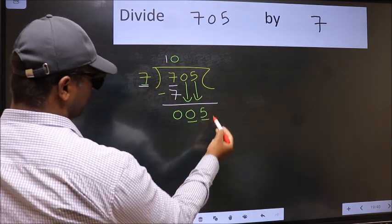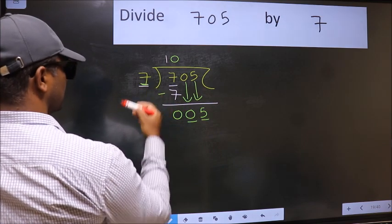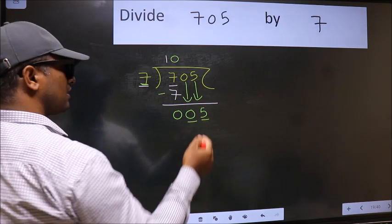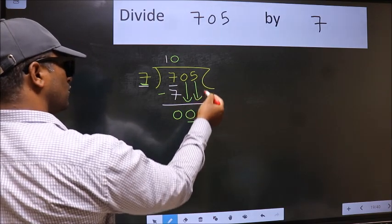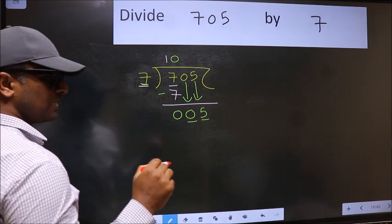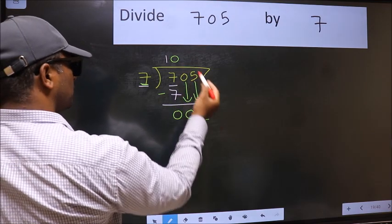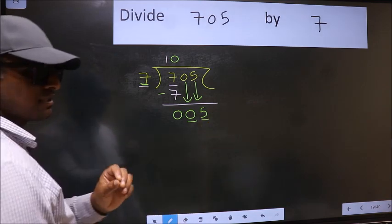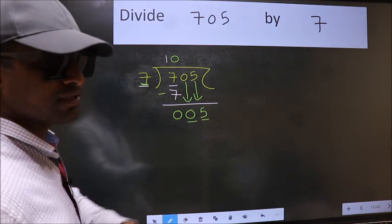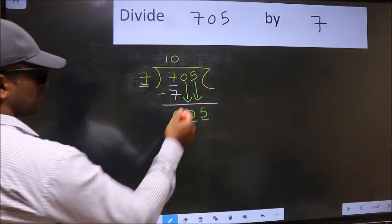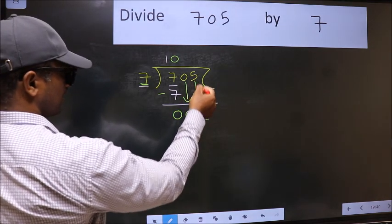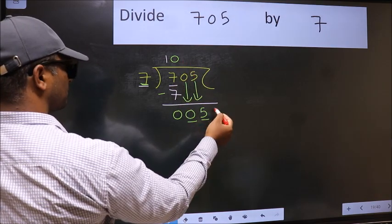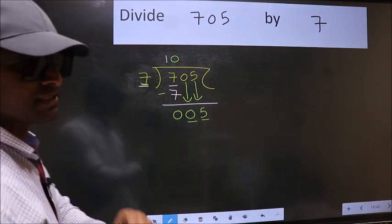Here we have 5 and here 7. 5 is smaller than 7. And we don't have any more numbers to bring it down. So what many do is they directly put dot, take 0. Which is wrong. Why is it wrong? Because just now you brought this number down, and in the same step, you want to put dot, take 0. Which is wrong.